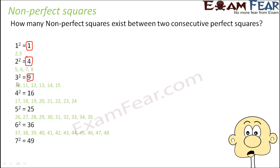One more interesting thing we observe here is that as the value of the perfect squares increases — like 1, then 4, then 9, then 16 — the number of non-perfect squares between them is also increasing. Initially between 1 and 4 there were 2 non-perfect squares. Between 4 and 9 there are 4 non-perfect squares. Between 9 and 16 there are 6 non-perfect squares, and so on. So as the value of the perfect squares increases, the number of non-perfect squares between them also increases.